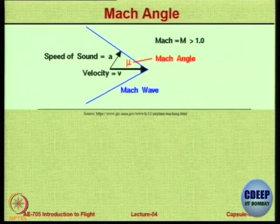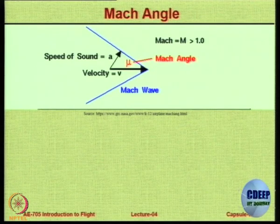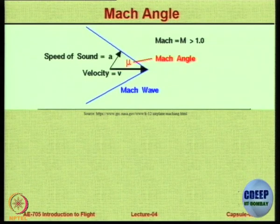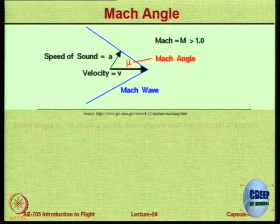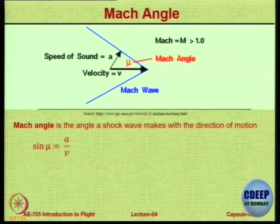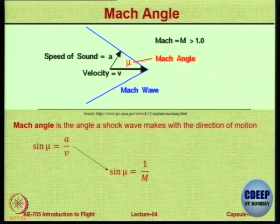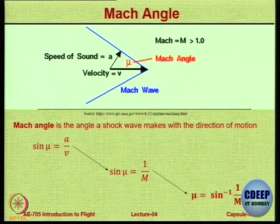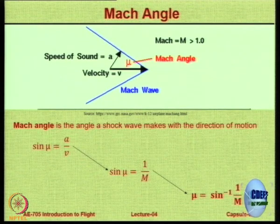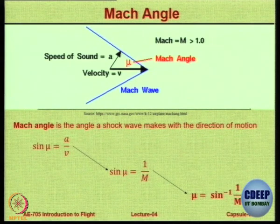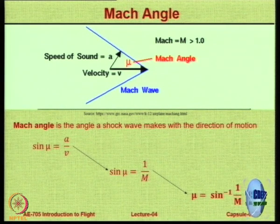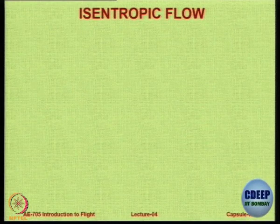The Mach angle μ is the angle at which the shock wave is inclined at a particular speed. There is a straightforward relationship: sin(μ) equals a/V, therefore sin(μ) equals 1/M, so μ equals sin⁻¹(1/M). As Mach number M increases, the value of μ reduces. By measuring the Mach angle numerically, you can figure out at what Mach number the aircraft is flying — it gives a visual indication of speed.